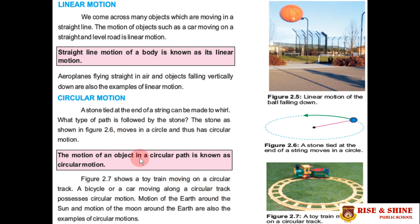The second type of translatory motion is circular motion. The motion of an object in a circular path is known as circular motion. For example, a stone tied at the end of a string moves in a circle, possessing circular motion. A toy train moving on a circular track is another example of circular motion.